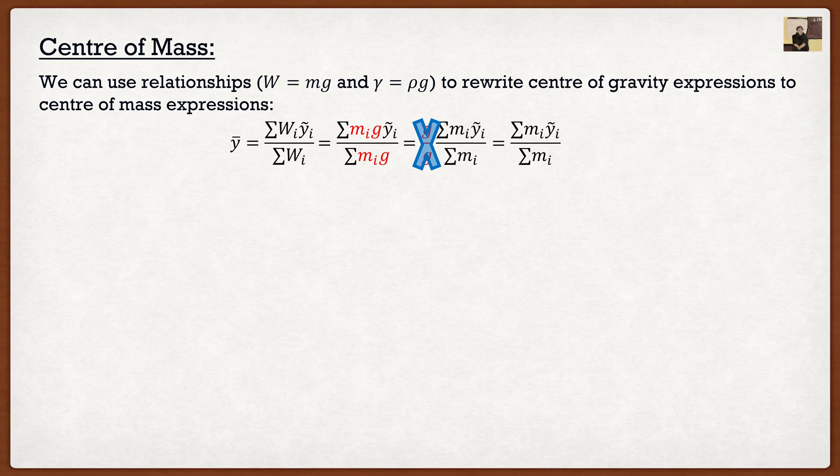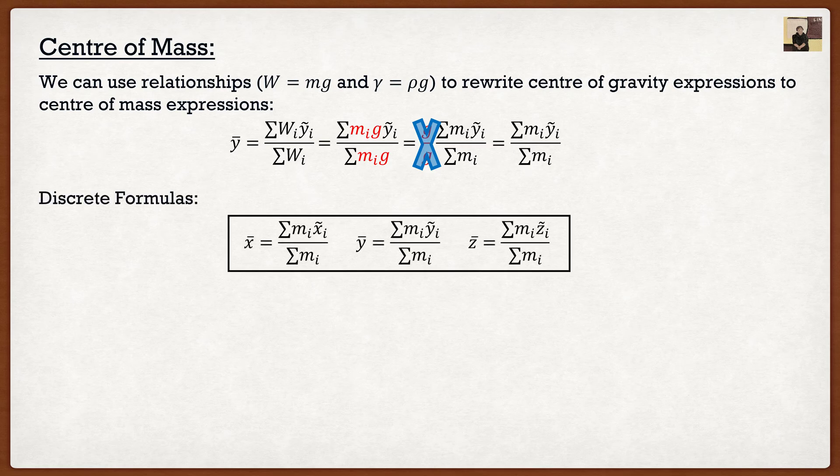So y bar is equal to the summation of mi times yi over the summation of mi and this will lead us to our discrete formulas.